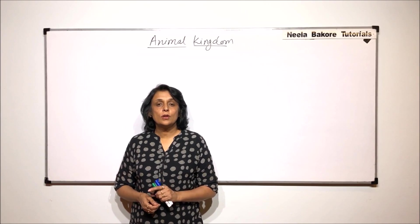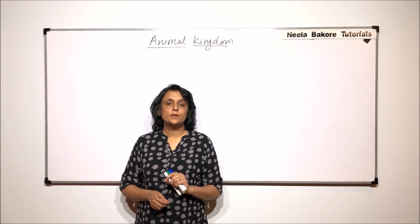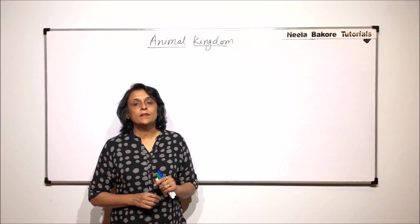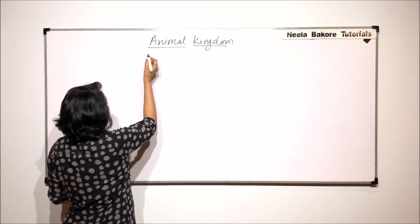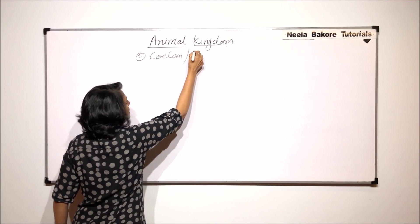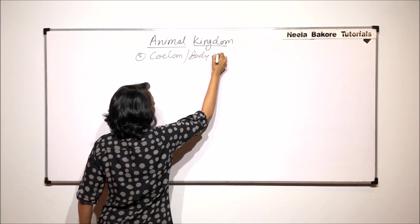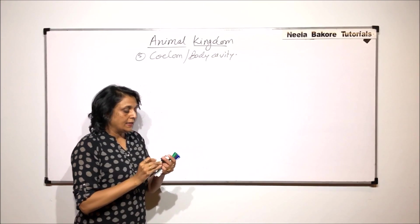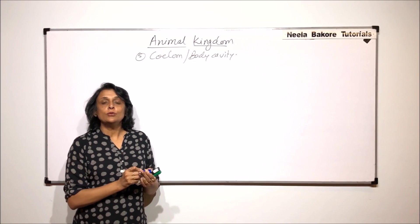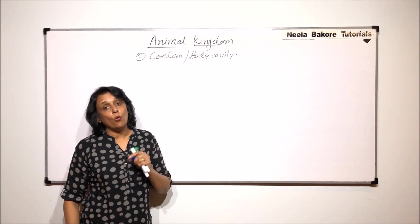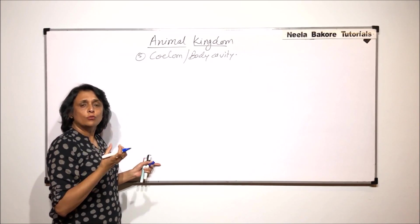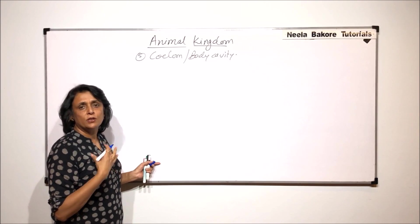In this video, we will talk about coelom, how many different types of coeloms are present, and we will try to understand the diversity in animal kingdom. The parameter that we are talking about here is coelom, which is commonly known as the body cavity, and we classify these coeloms on the basis of how they are formed and their origin. On the first parameter, that is how this body cavity is formed and whether it is present or not.